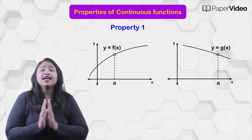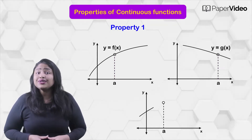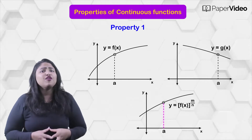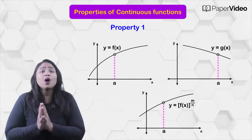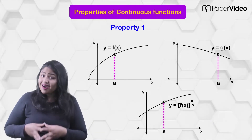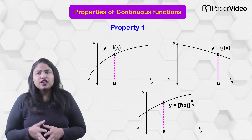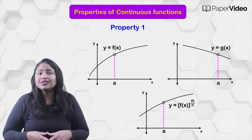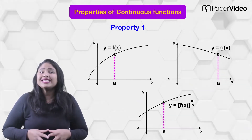The function f(x) raised to m by n is continuous at x equals to a, provided f(x) raised to m by n is defined on an interval containing a, and m and n are integers. This means that a function made of an exponent of a continuous function is continuous at the same point the function is continuous.